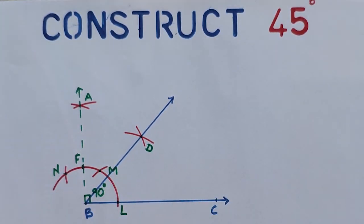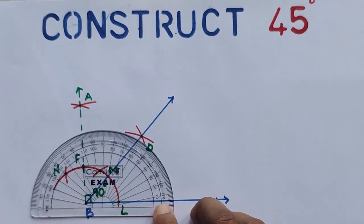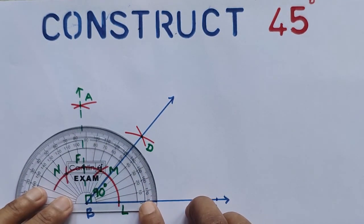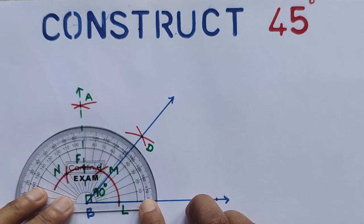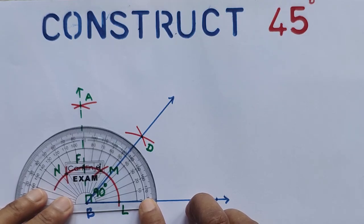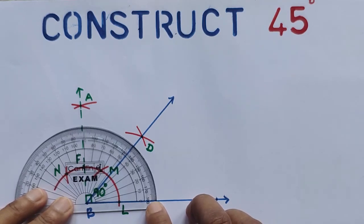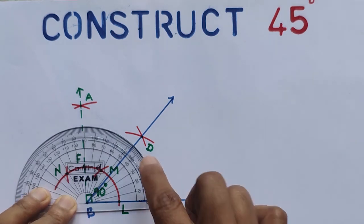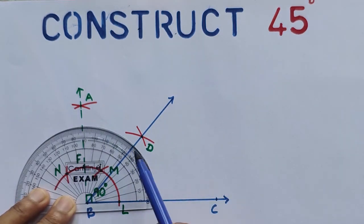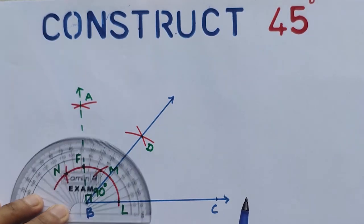We can verify with a protractor. You can see that angle DBC is 45 degrees.